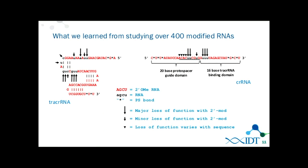Essentially what we've learned and developed is a roadmap of where you can modify the tracrRNA or crRNA and maintain activity. The protospacer area of the crRNA has more sequence-specific biases because that is where you have your target-specific regions. We now have different modification patterns depending on the system — whether you're in a high-nuclease environment, whether your oligos are protected by a liposome, or what level of modification you need — that can improve activity as well as make them more stable.